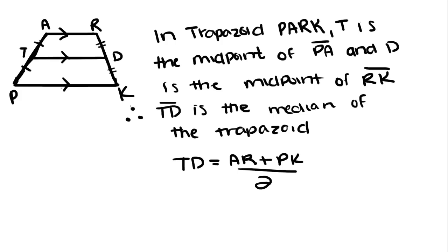So in trapezoid PARK, T is the midpoint of PA, so that means T divides PA into two equal parts. And D is the midpoint of RK, so that means those are congruent.